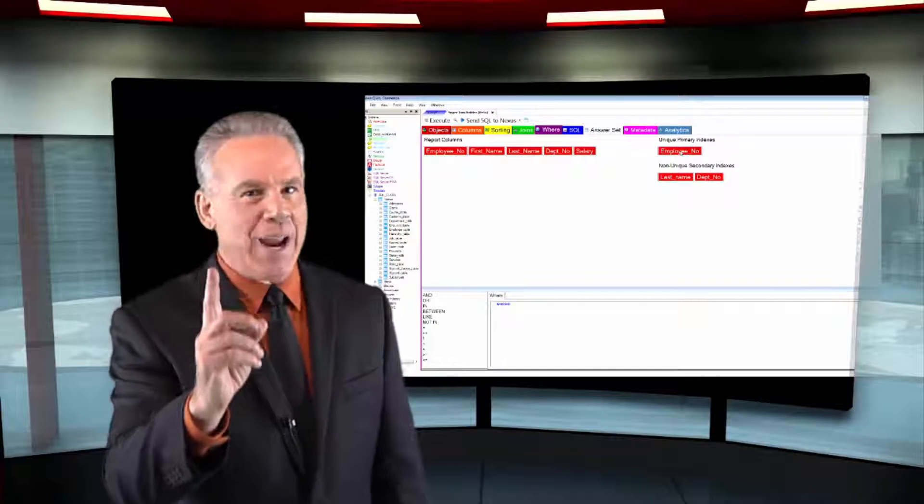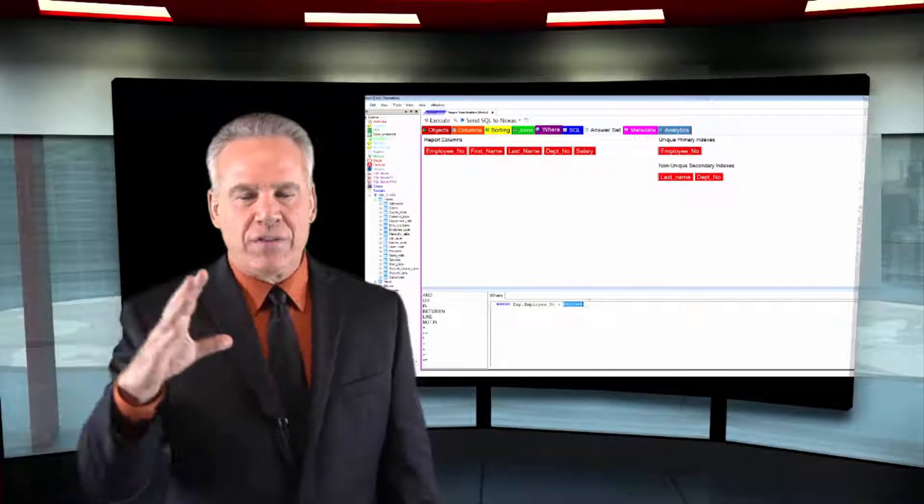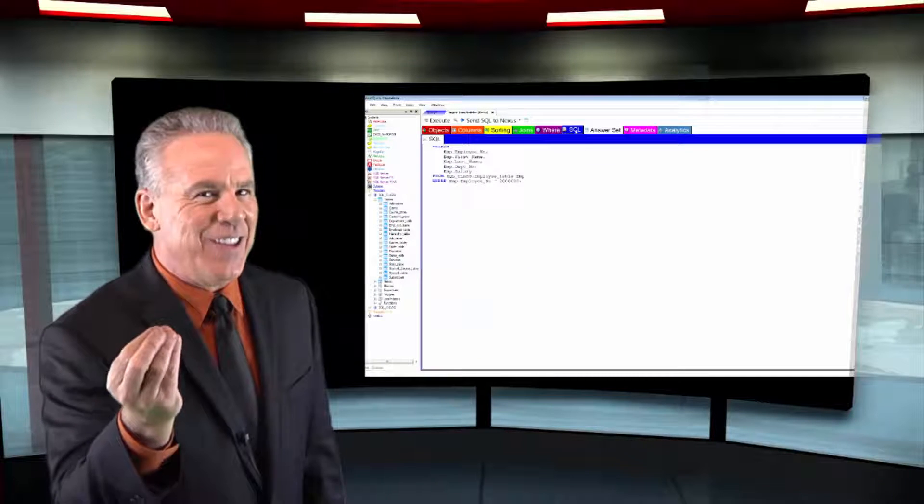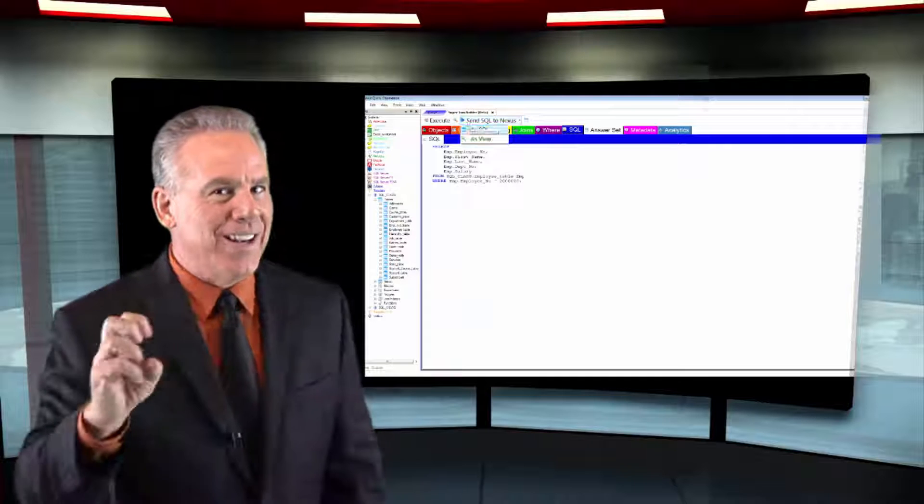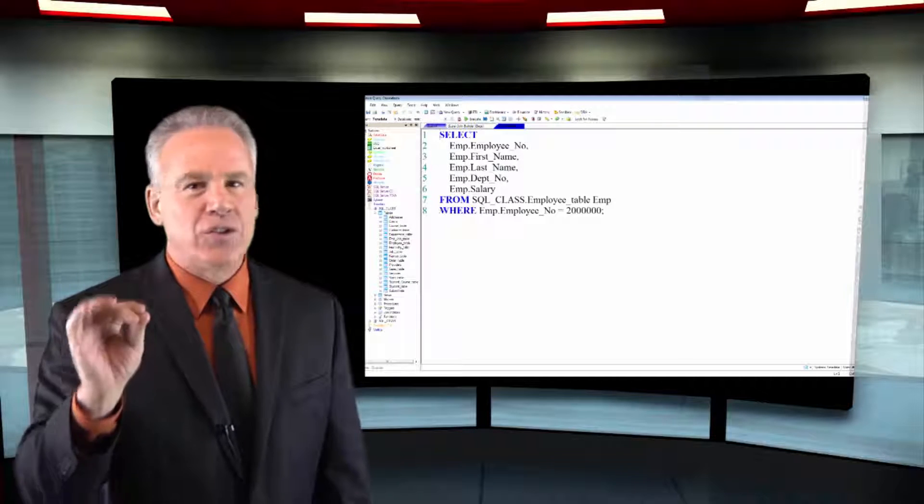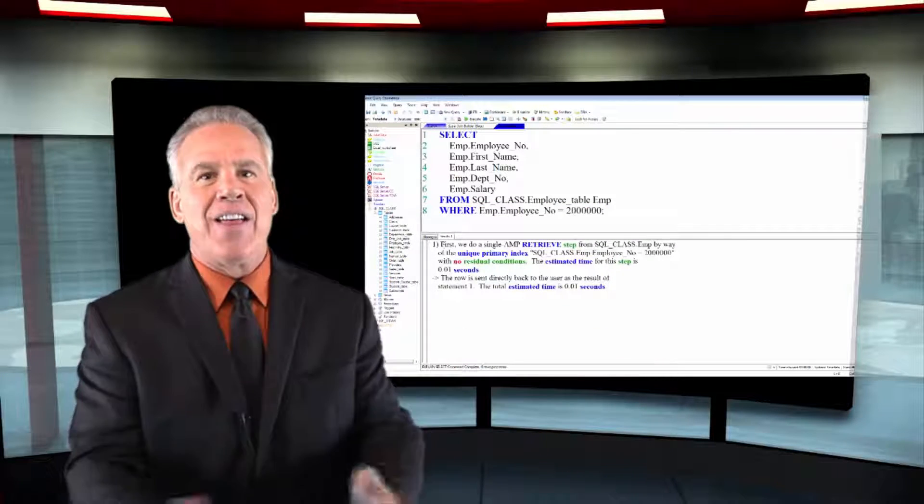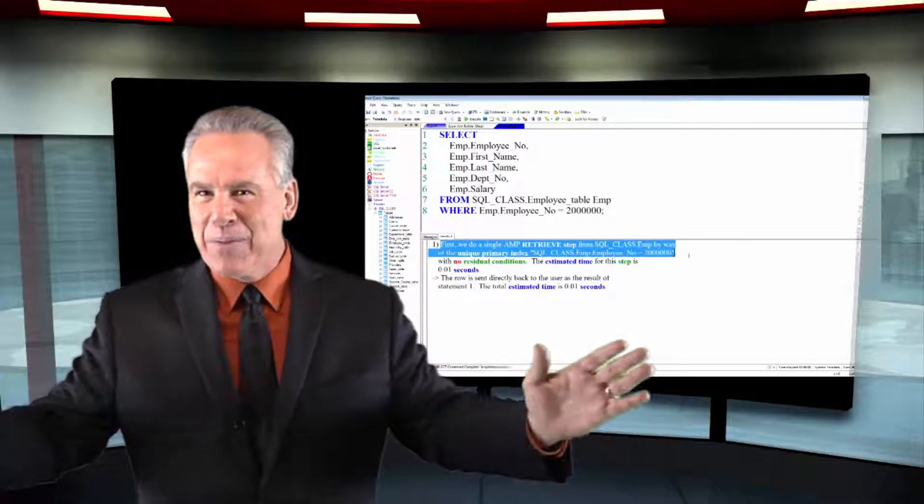You still have to follow locking rules, but you're never placed in the queue because it's going to be a one-second query. So remember, pseudo tables are only associated with queries that are all AMP queries.